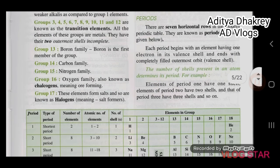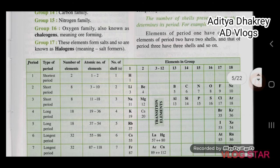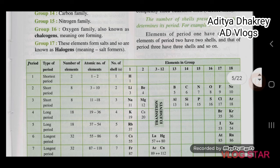Periods are the 7 horizontal rows in the modern periodic table. Each period begins with an element having one electron in its valence shell and ends with a completely filled outermost orbit. The number of shells present in an atom determines its period. For example, elements of period 1 have 1 shell, elements of period 2 have 2 shells, and elements of period 3 have 3 shells, and so on.